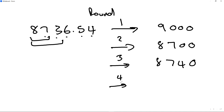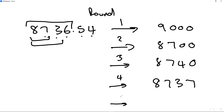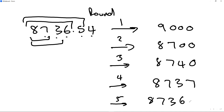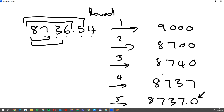If I round to four significant figures, I go to 8737. If I've got five significant figures, I go all the way to 8736.5, and the trailing zero matters — it stays as 8736.50, and those zeros afterwards count.